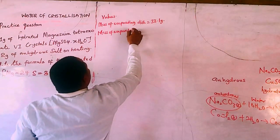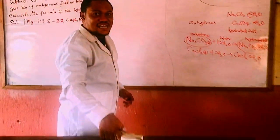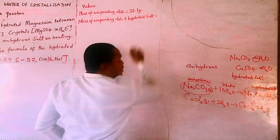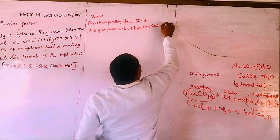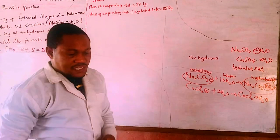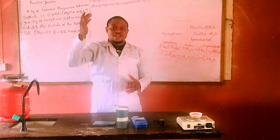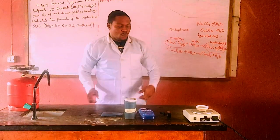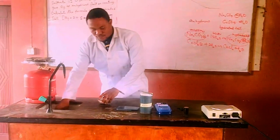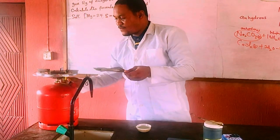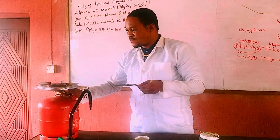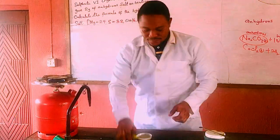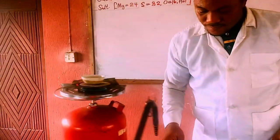The mass of evaporating dish plus hydrated salt equals 35.5 grams. Now we want to drive off the water of crystallization by heating the salt using a heat source.